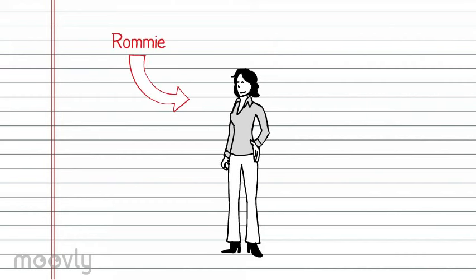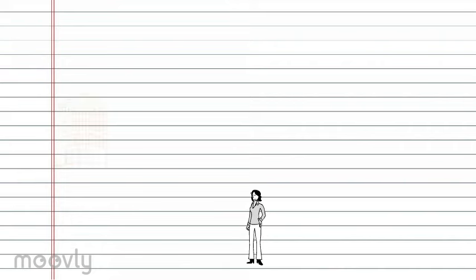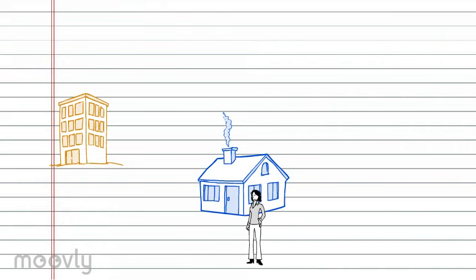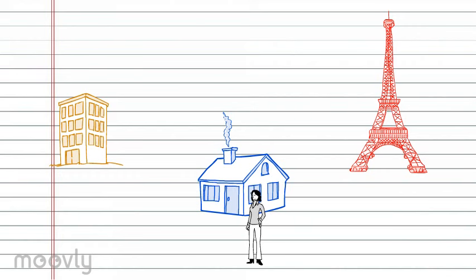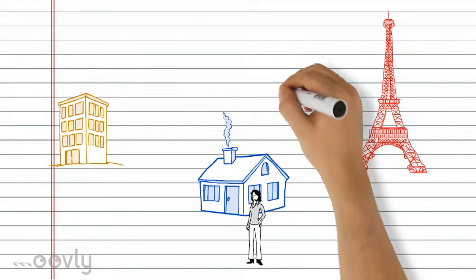A simple example of a Markov process might be a person. We'll call her Romy. Let's say that Romy can travel between three different possible places: work, home, and the Eiffel Tower. In this Markov model, each of these three locations is called a state.